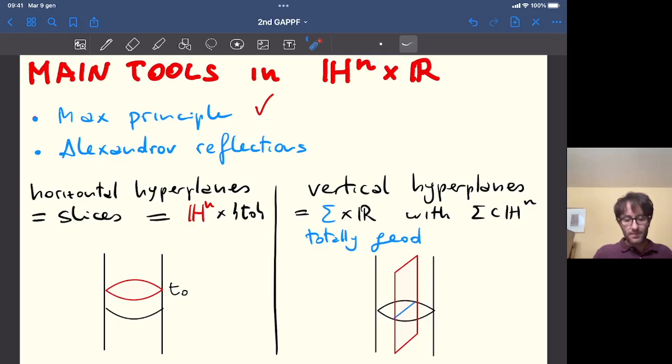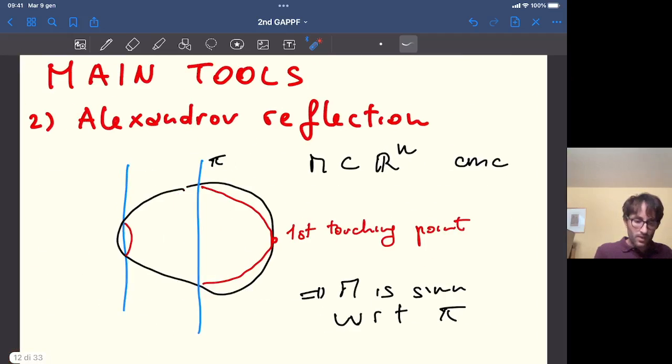And so, here we see the first problem. In a generic Riemannian manifold, a totally geodesic hypersurface could not even exist.